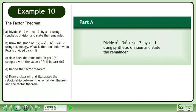In this example, we'll learn about the Factor Theorem. In Part A, divide x-cubed minus 3x-squared plus 4x minus 2 by x-1 using synthetic division and state the remainder.